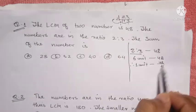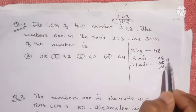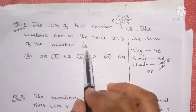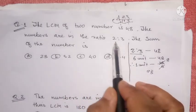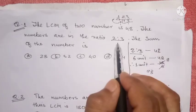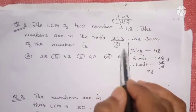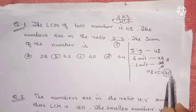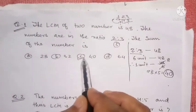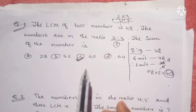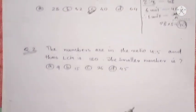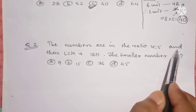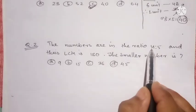The sum of the numbers is 2 to 3. The numbers are in the ratio 4 is to 5 and their LCM is 180. So the numbers are in the ratio 4 is to 5 and their LCM is 180.